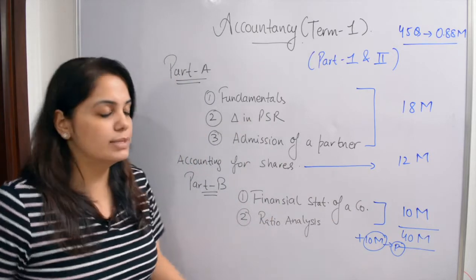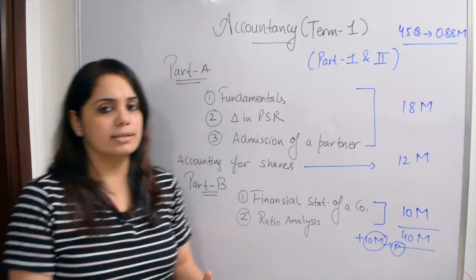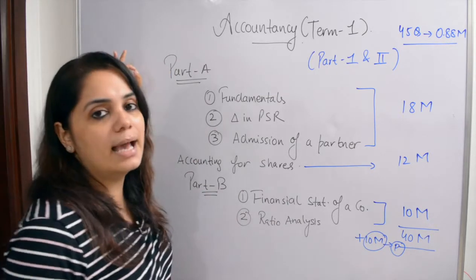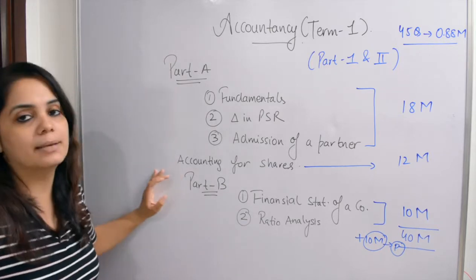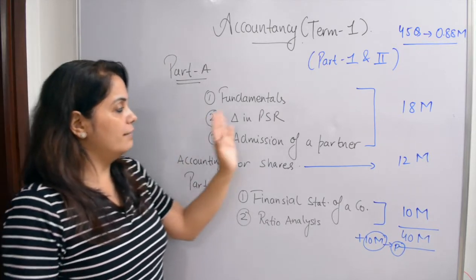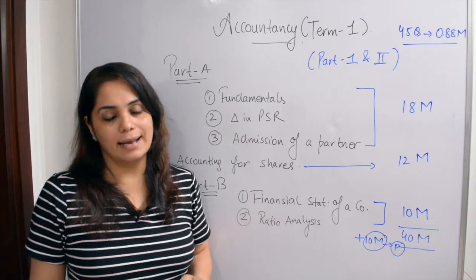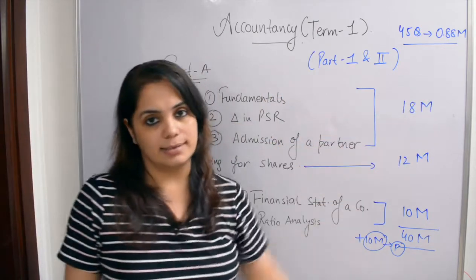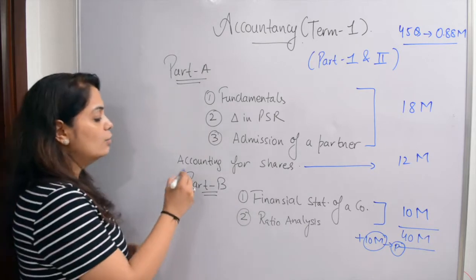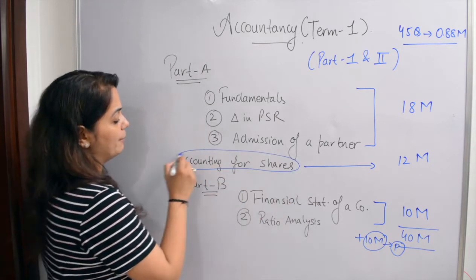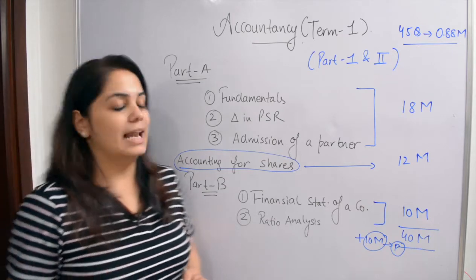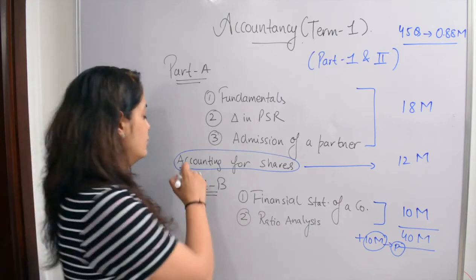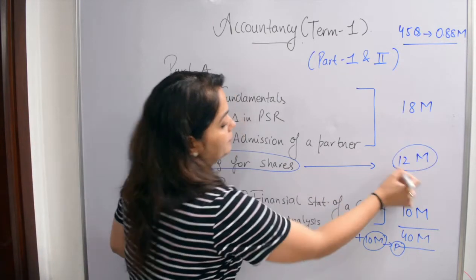I will tell you which chapters are included in Term 1. Accountancy has been divided into two parts: Part A and Part B. In Part A, we have Fundamentals of Partnership, Change in Profit Sharing Ratio, and Admission of a Partner. These three chapters carry 18 marks. Next, Accounting for Shares — also called Share Capital — is from the second book covering shares, debentures, and redemption of debentures. Only one topic from this is in Term 1, carrying 12 marks.